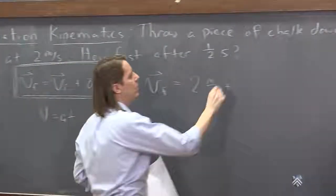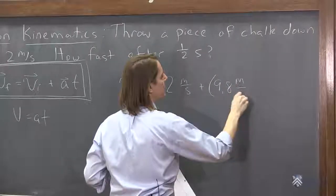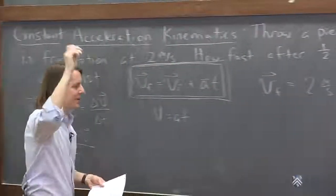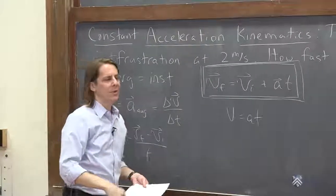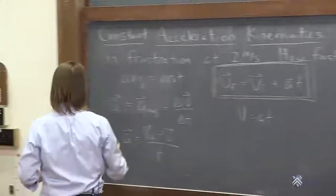So a, we know, is 9.8 meters per second squared. I'll put units. I'm making it positive because we're thinking of down as positive. If we thought of down as negative, I would need to put a negative sign here, but let's think of down as positive. Here we go.